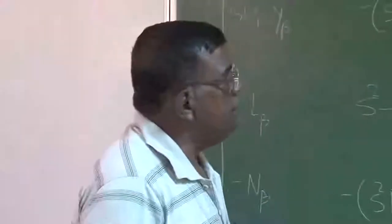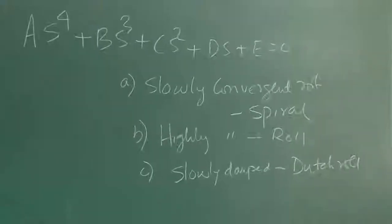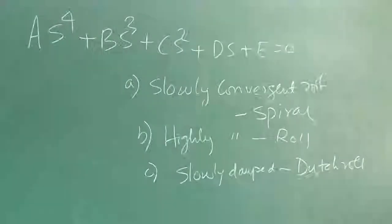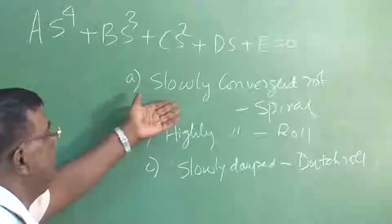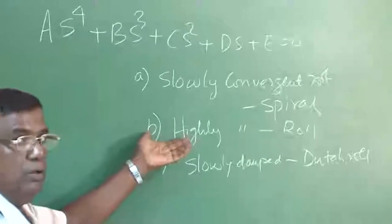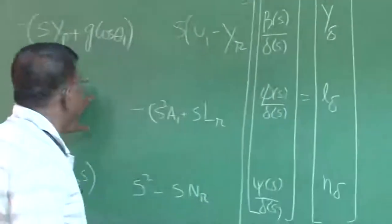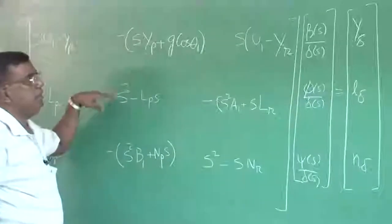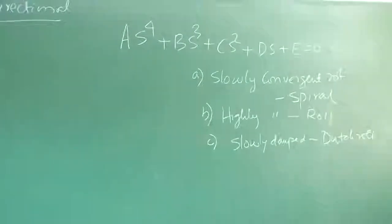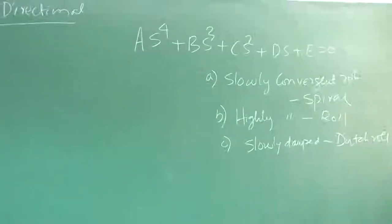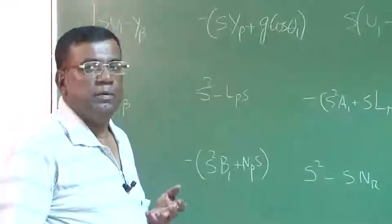We are trying to get interpretation via the roots of this characteristic equation. The coefficients a, b, c, d, e can be easily computed once we know the lateral directional dimensional derivatives. Generally for most aircraft, you get roots like this: one slowly convergent real root, one highly convergent real root with negative sign, and a slowly damped dutch roll as oscillatory roots. We will use the matrix equation and take the determinant equal to 0 to find the characteristic equation a·s⁴ + b·s³ + c·s² + d·s + e = 0.